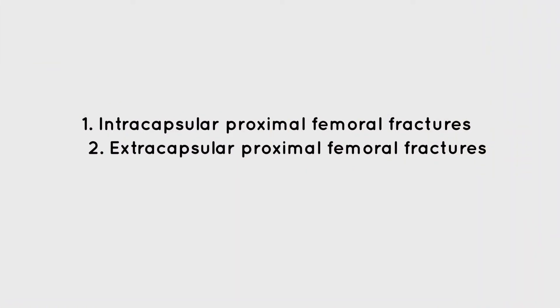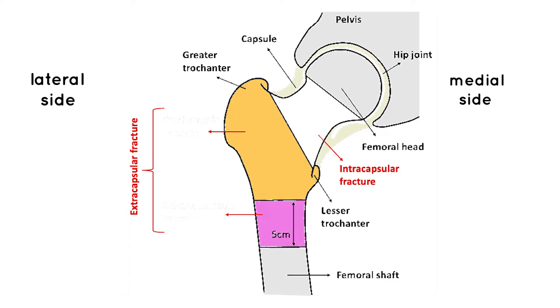The naming of proximal femoral fractures is based on where they occur within the proximal femur. We can divide proximal femoral fractures into two groups: intracapsular proximal femoral fractures and extracapsular proximal femoral fractures. The capsule is attached just medial to the intertrochanteric crest, so every fracture that occurs within the femoral neck medial to or just before the intertrochanteric crest is regarded as an intracapsular femoral fracture.